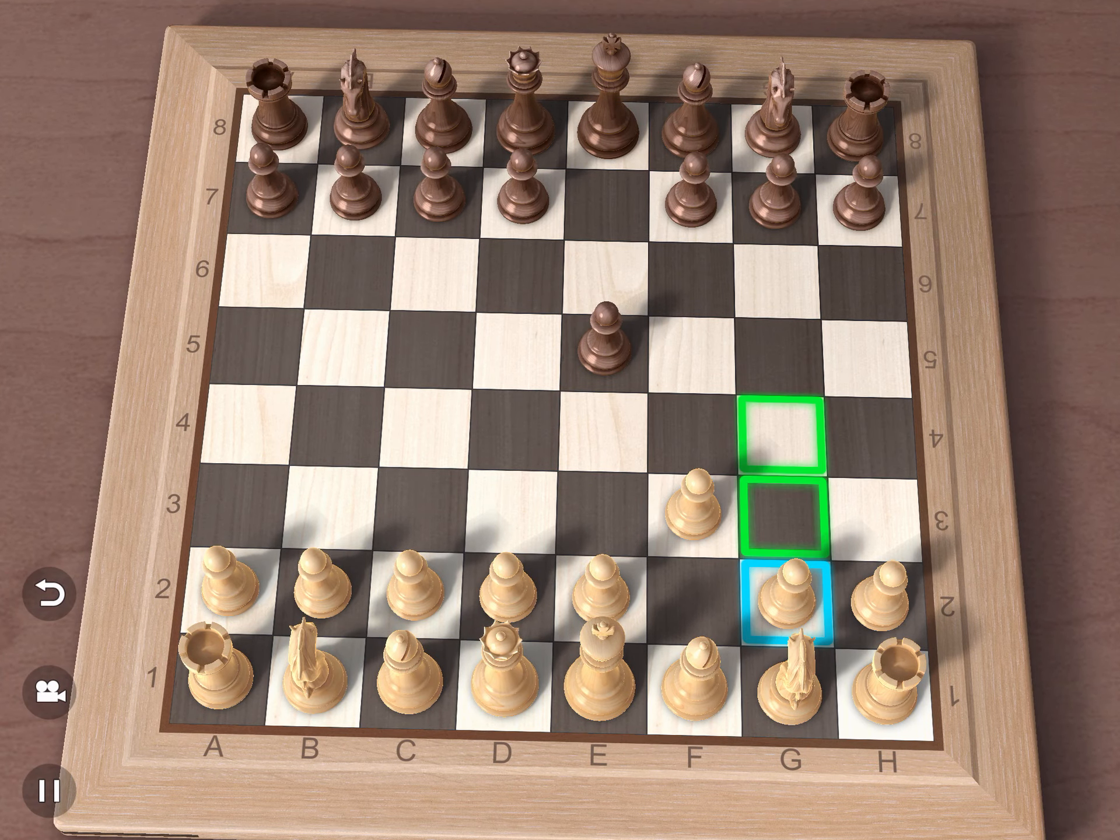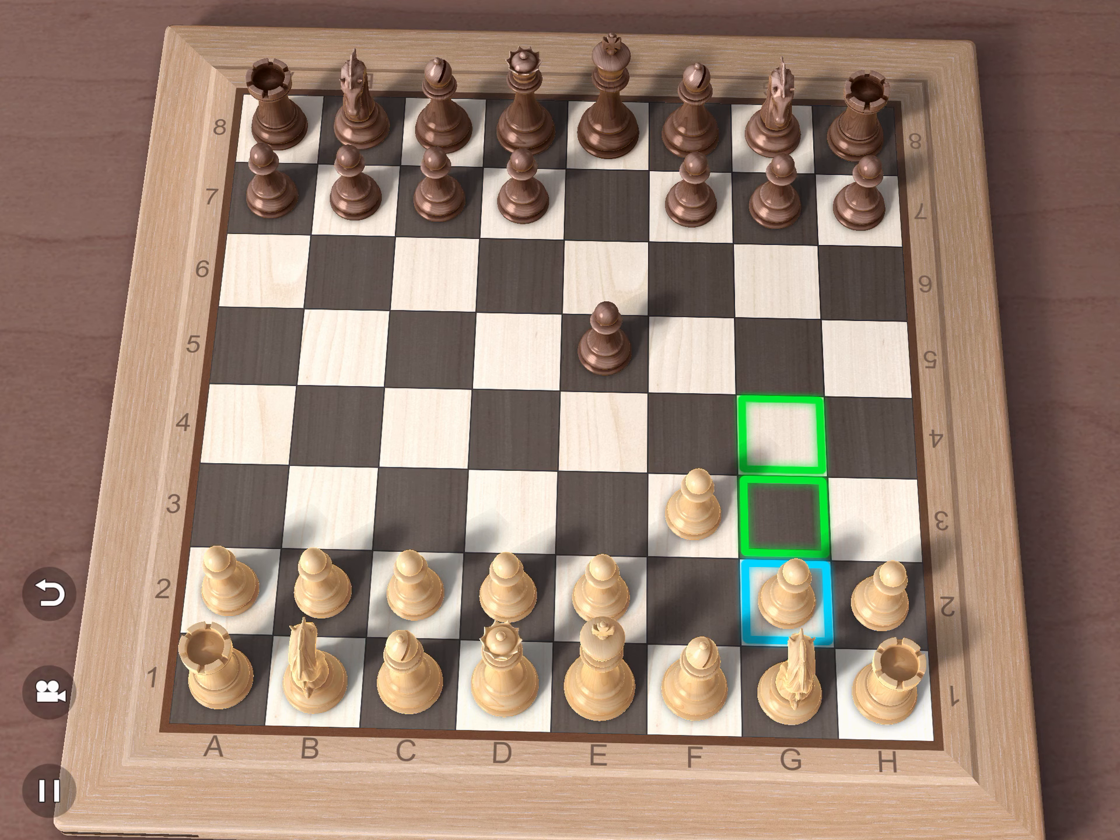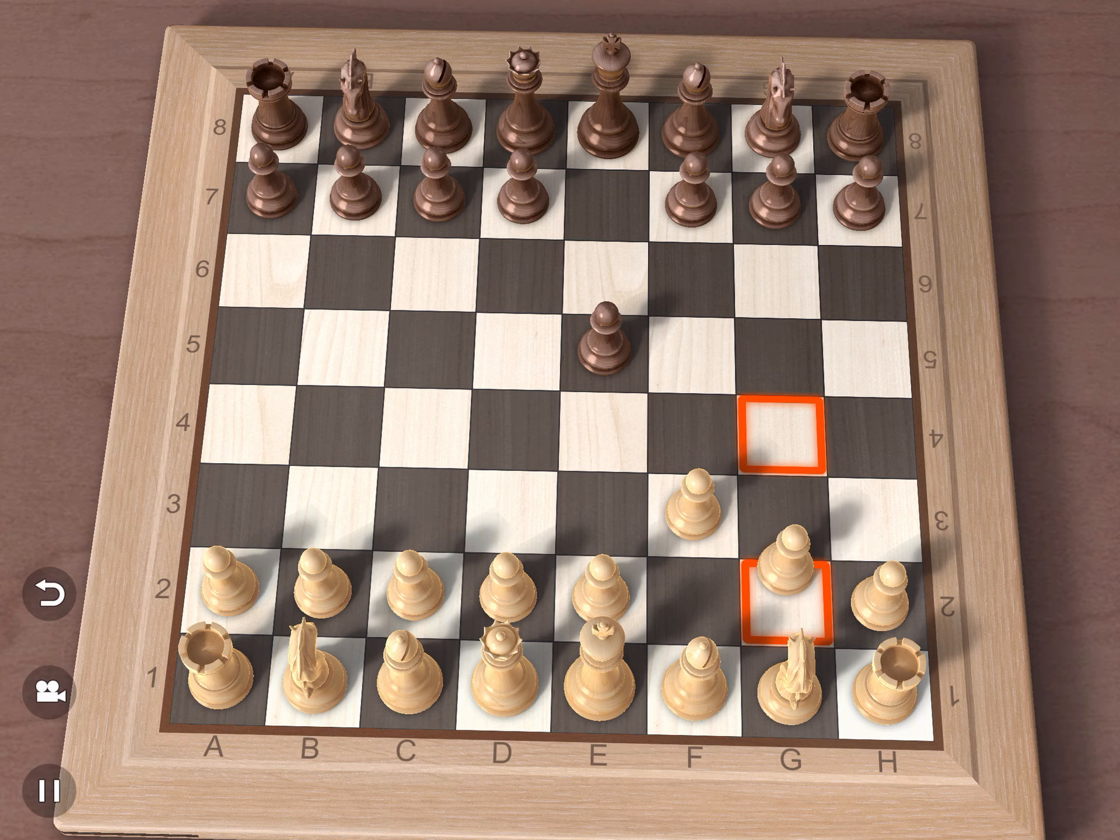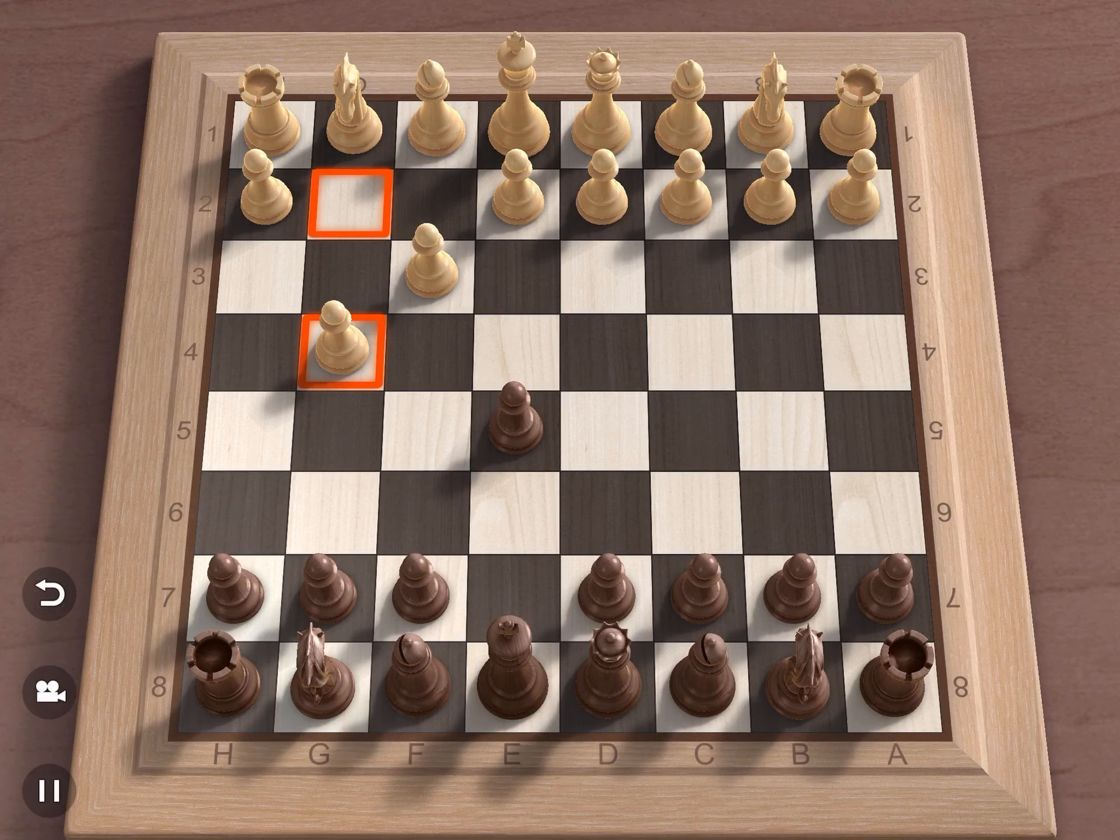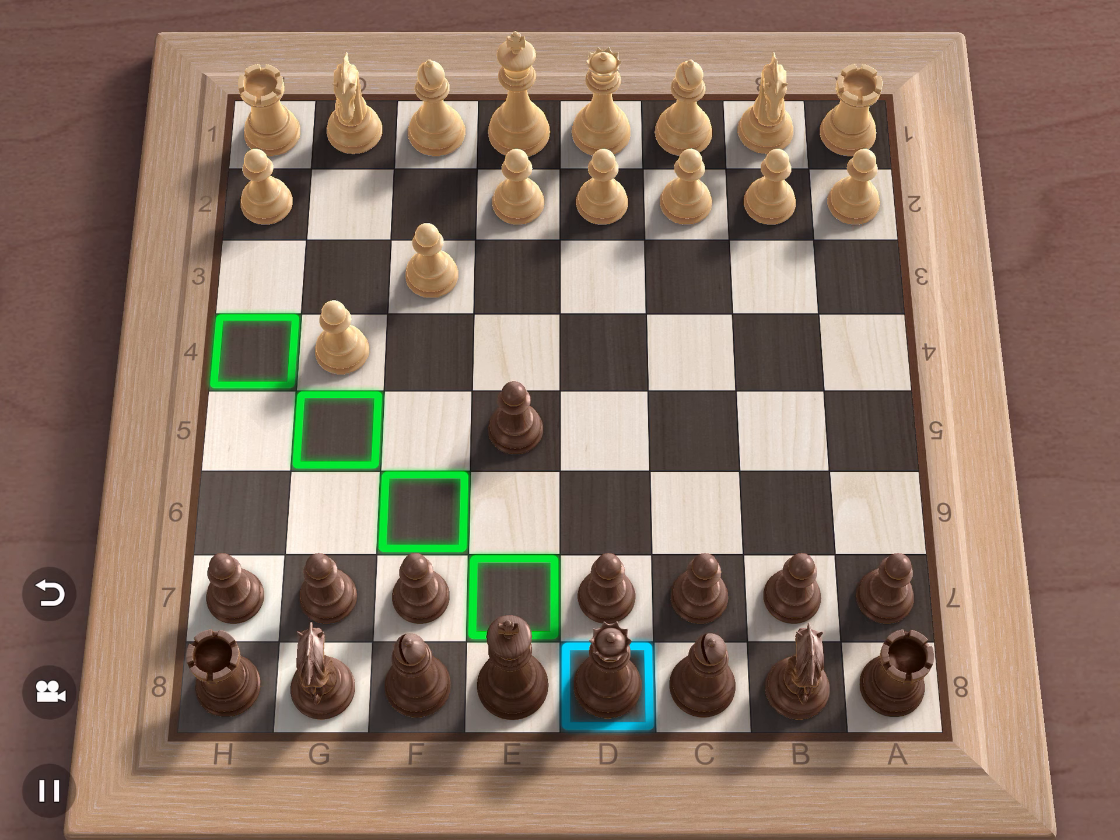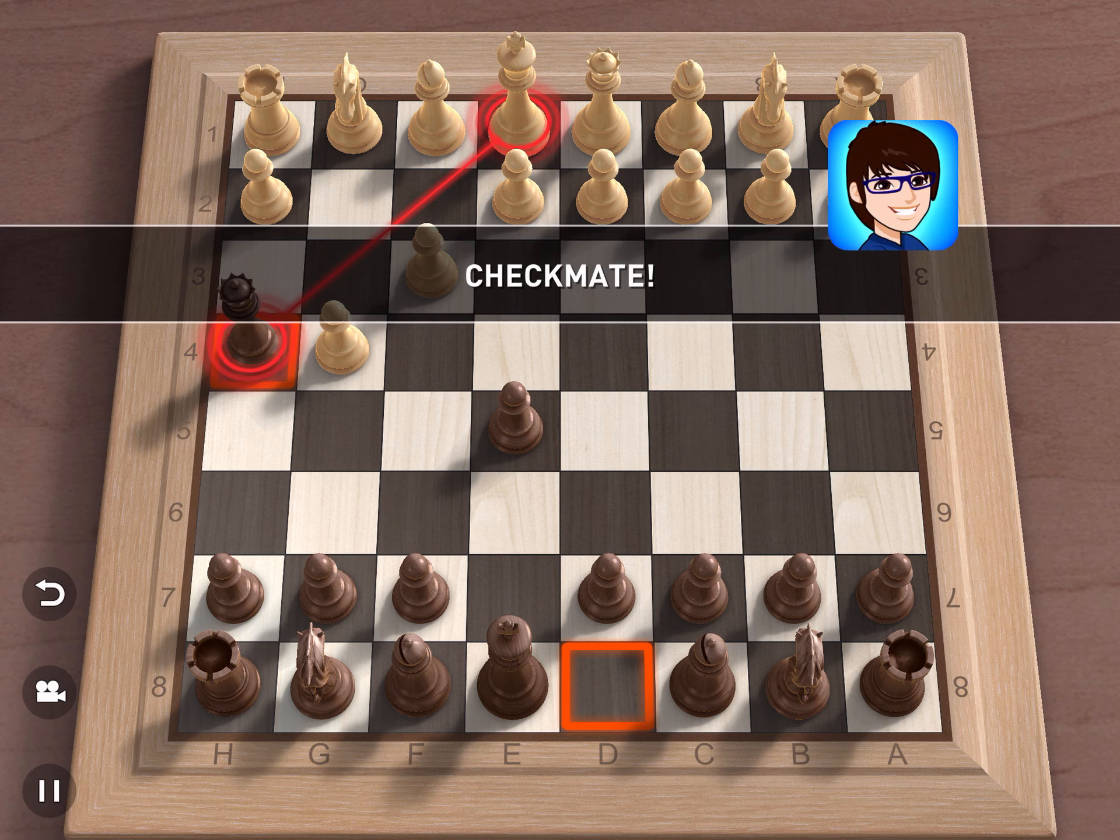So now white will move another weak square. It's not as weak as F2. It's G2, and if it moves the pawn twice, can you find the checkmate? Yep, it's that sneaky queen. Queen to H4. Bam! Checkmate!